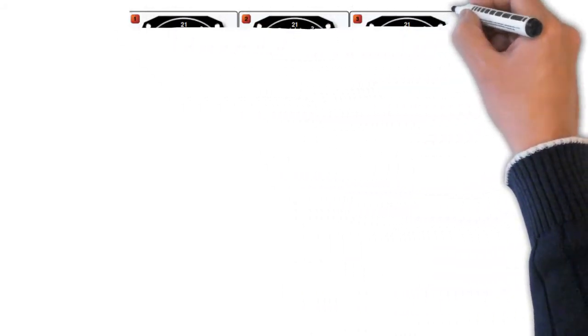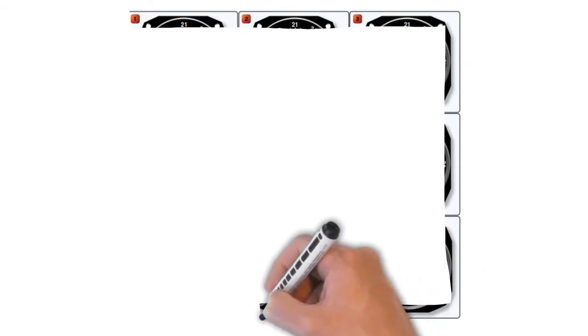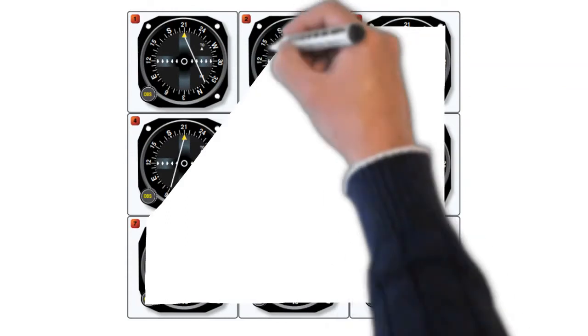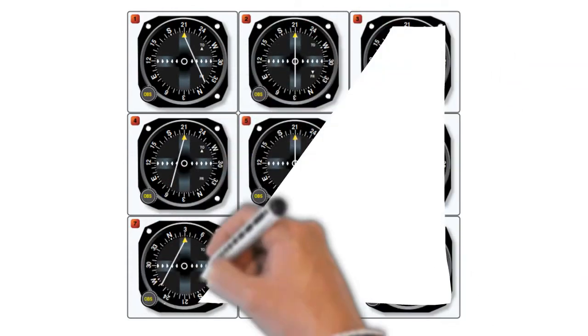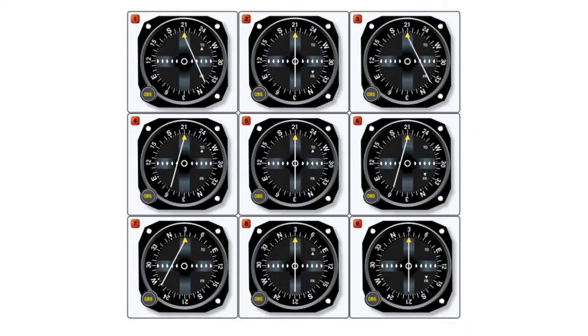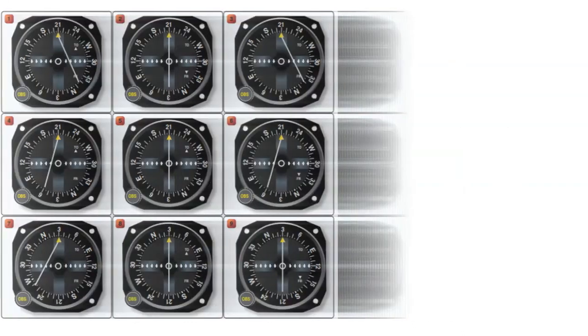This next illustration is a picture taken directly from the FAA Computer Testing Supplement, which is available online. And at the end of this video, I'll give you a link that you can actually go to the website and download this booklet. This depiction shows nine different CDIs, which demonstrate various aircraft positions in relation to the VOR transmitter, which is located on the ground.